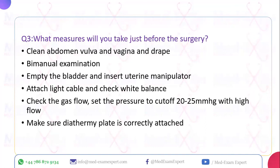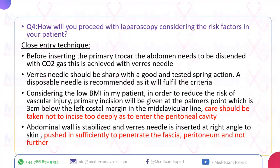Clean and drape the abdomen, vulva, and vagina. Empty the bladder, perform a bimanual examination, and insert the uterine manipulator. Attach the light cable and check white balance. Check gas flow and set the pressure cut-off to 20–25 mmHg with high flow. Ensure the diathermy plate is correctly attached. For this patient with low BMI, use a Veress needle with a sharp tip and a tested spring action — a disposable needle is recommended as it reliably meets these criteria.